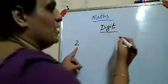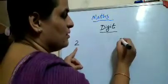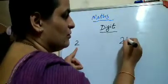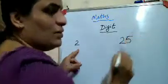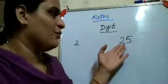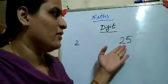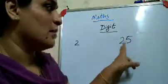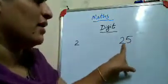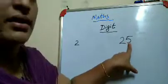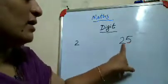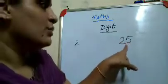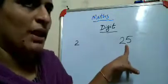Another number. This number is 25. 25 is a two-digit number.